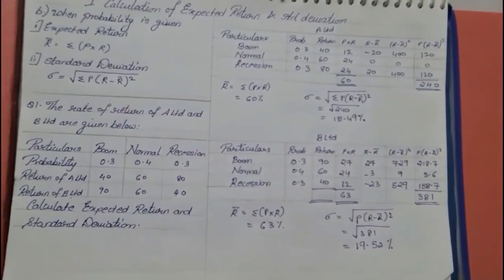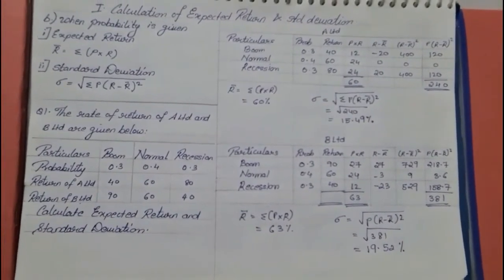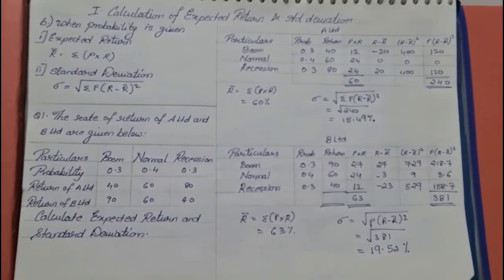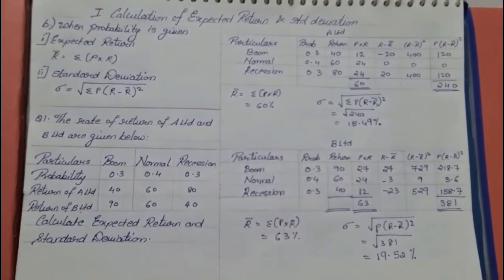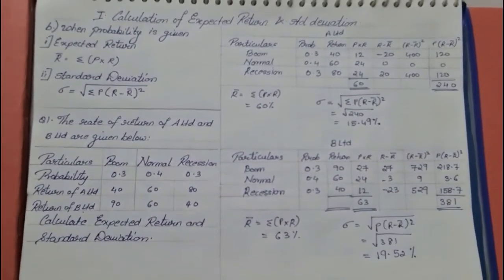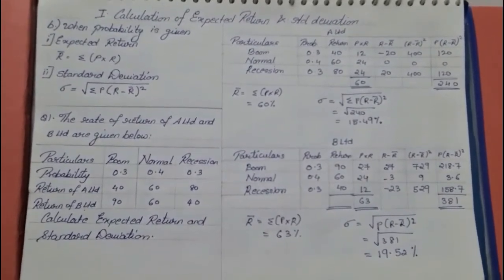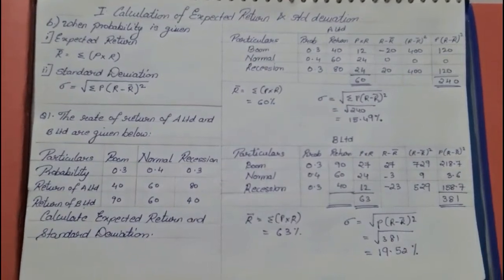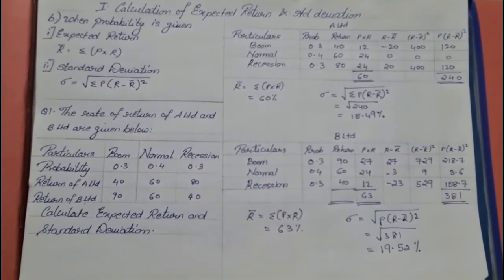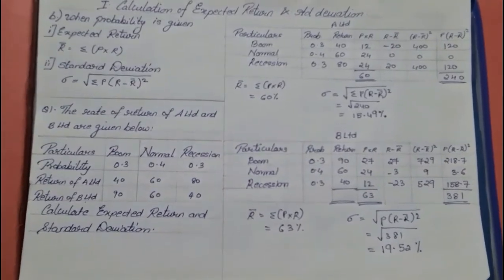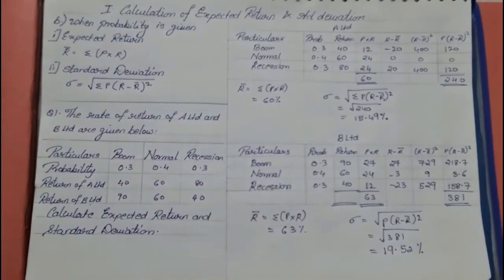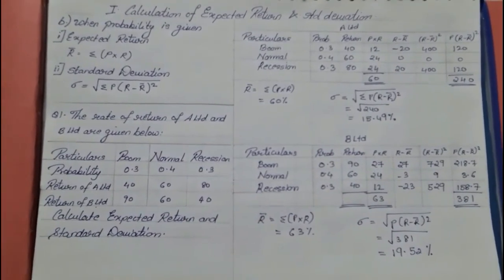With that we were able to solve sums based on expected return and standard deviation when probability was given. We have now completed the first topic under risk and return analysis — expected return and standard deviation under two methods: one when probability is not given, and the other when probability is given. I hope everyone has understood this. Stay tuned for other videos. Thank you.